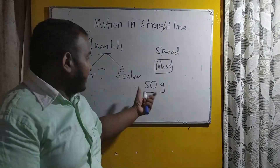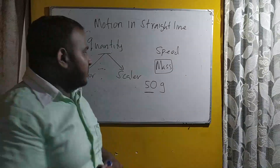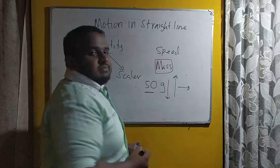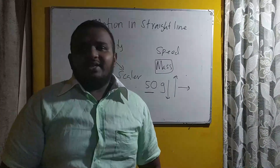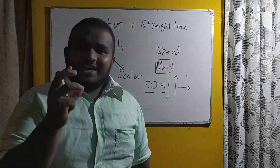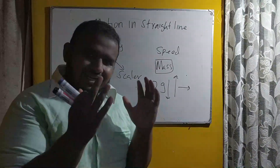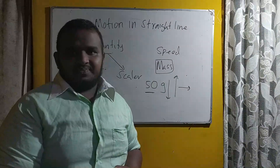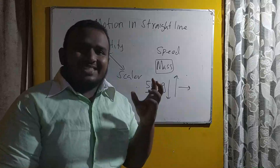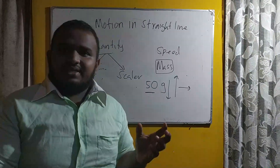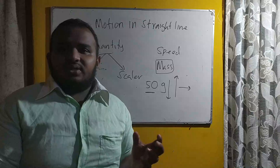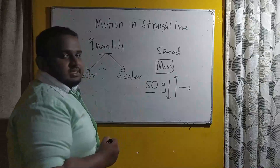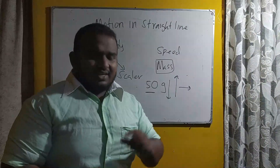The numerical value of 50 is sufficient to define the quantity. We don't need any additional information. Examples of scalar quantities are speed, mass, distance, and energy, etc.